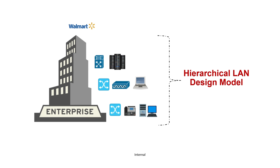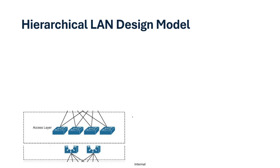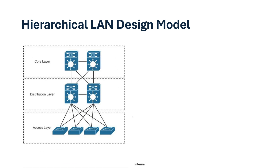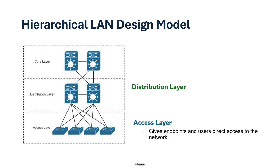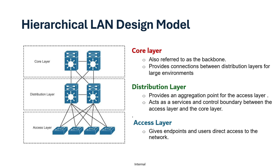So what is the hierarchical LAN design model? The hierarchical LAN design model divides the enterprise network architecture into three layers: access layer, distribution layer, and core layer. The access layer gives endpoints and users direct access to the network, whereas the distribution layer provides an aggregation point for the access layer and acts as a services and control boundary between the access layer and the core layer. And the core layer, also referred to as backbone, provides connection between distribution layers for large organizations.